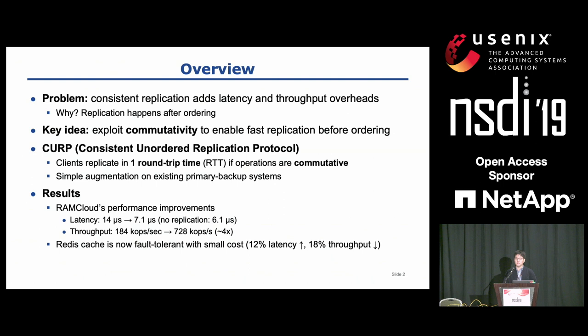To remove the overhead of consistent replication, I invented a new replication protocol which exploits commutativity to enable fast replication before ordering. It is called Consistent Unordered Replication Protocol, in short, CURP. In CURP, a client can replicate in one round-trip time if an operation is commutative with the other concurrent operation. This approach almost removed the overhead of consistent replication.